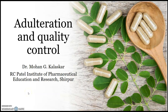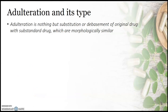In this chapter we are going to highlight the adulteration and quality control of crude drugs. Adulteration is nothing but the substitution, debasement, or replacement of the original drug with a substandard drug which is morphologically similar.